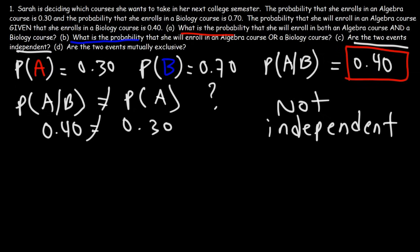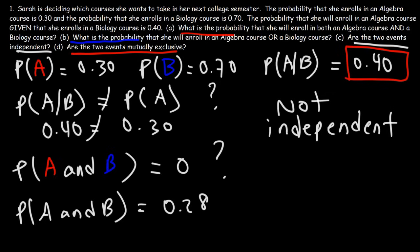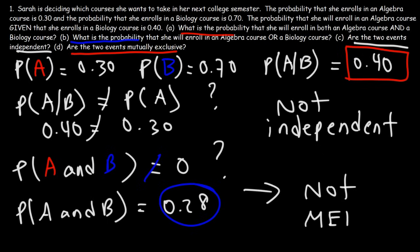For Part D: are the two events mutually exclusive? In order for the two events to be mutually exclusive, the probability of event A and event B occurring together must equal zero. We know that P(A and B) is 0.28, as calculated in Part A. Since it does not equal zero, events A and B are not mutually exclusive events.